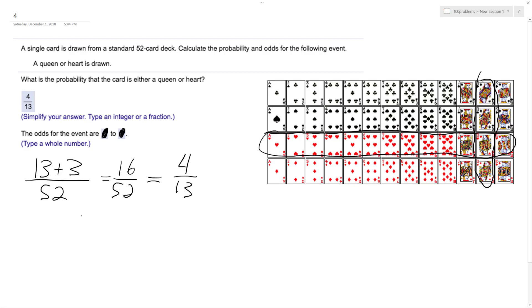So the odds of the event, that just means winning against losing. So if there's a four out of 13 chance, well, 13 minus four is nine, so there's a four to nine odds, four in your favor, and that should work out.